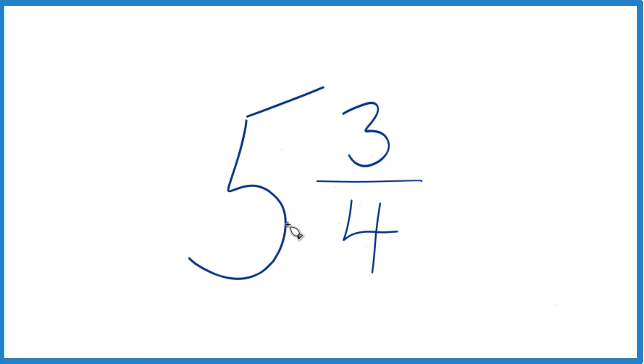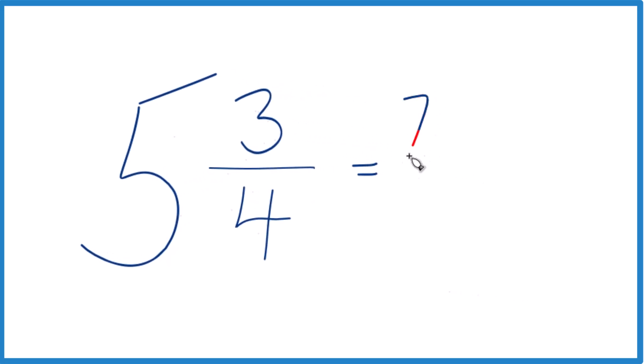You take the whole number, 5 times 4, that's 20, then you add the 3. That gives you 23, that's your numerator, and then you bring the 4 across for the denominator.